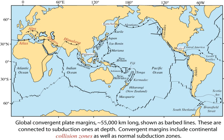Subduction is a geological process that takes place at convergent boundaries of tectonic plates where one plate moves under another and is forced to sink due to gravity into the mantle. Regions where this process occurs are known as subduction zones. Rates of subduction are typically in centimeters per year, with the average rate of convergence being approximately 2 to 8 centimeters per year along most plate boundaries. Plates include both oceanic crust and continental crust.